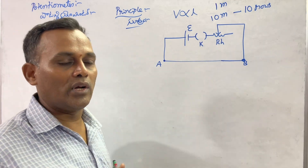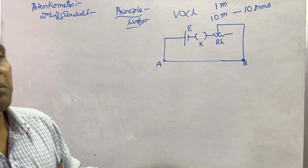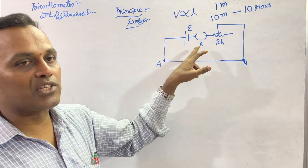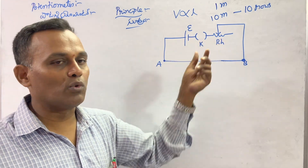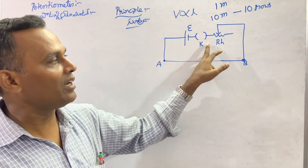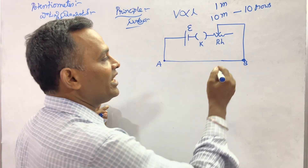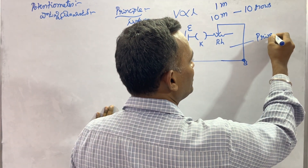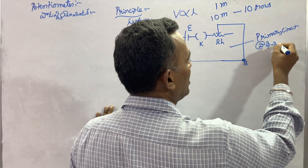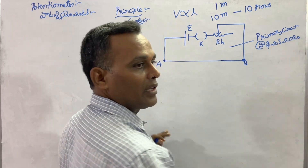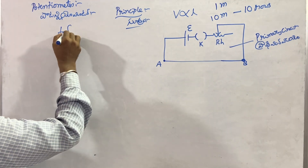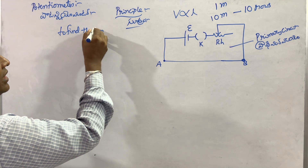We can use a variable resistance, so we use a rheostat. This is part of the primary circuit. The primary circuit is used to find the internal resistance of the given primary cell.